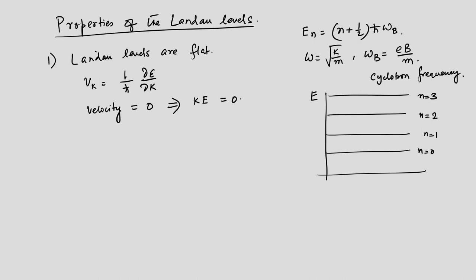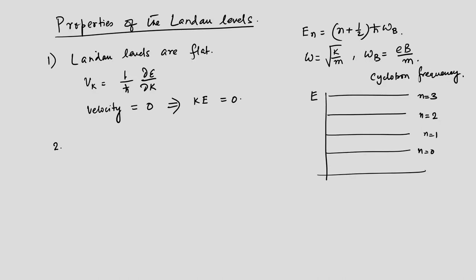The only energy that remains is potential energy. Because the degeneracy is very high, it is very likely that electrons would be interacting at least moderately to strongly, and these effects will be discussed later when we talk about the fractional quantum Hall effect. But those are some of the properties of these Landau levels.